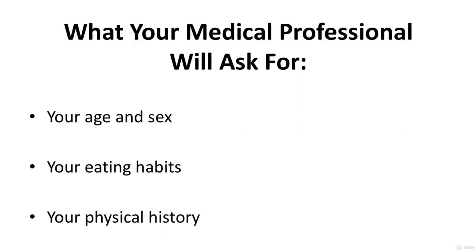Your health professional will usually ask you a series of questions, such as your age and sex, and about your eating habits and physical history. They will take your vital signs — such as weight, blood pressure, and temperature — and may do a test to determine your body fat ratio. This is so they can make a realistic assessment of your condition. For example, if you are a 25-year-old gymnast or martial arts student who has just started lifting weights, it is safe to assume that your pain is muscular in origin.